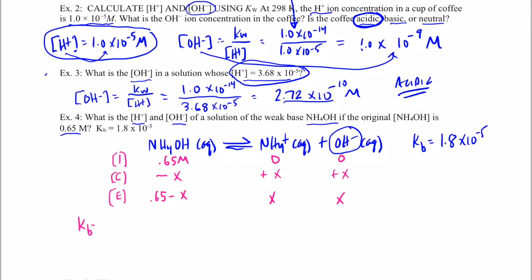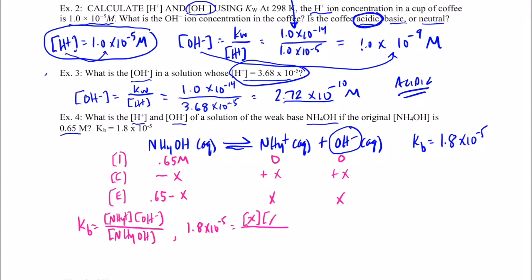Writing the equilibrium expression for this reaction: we have the NH₄⁺ concentration at equilibrium times the hydroxide concentration, all over the ammonium hydroxide concentration. Substituting in, Kb equals 1.8 times 10 to the negative 5th, which equals x times x over 0.65 minus x.